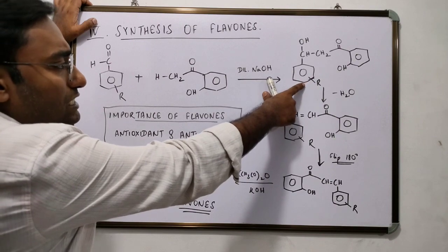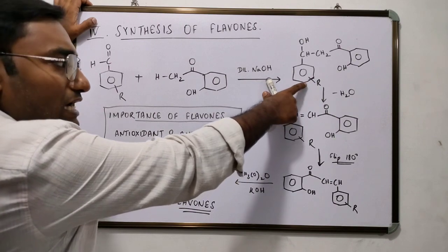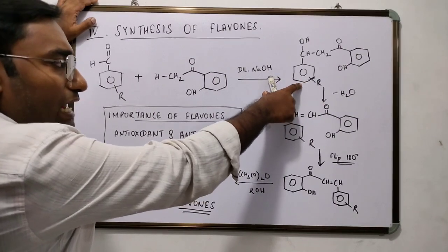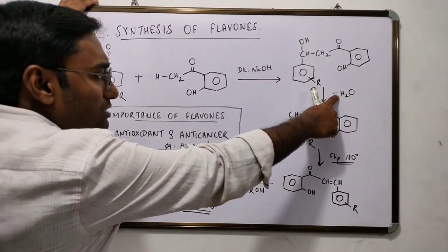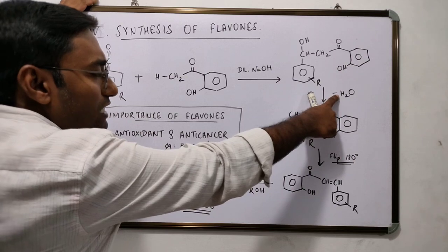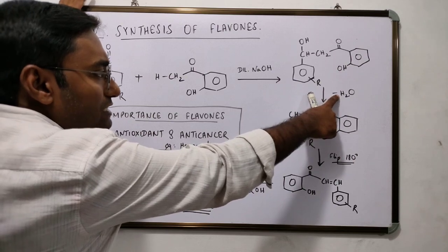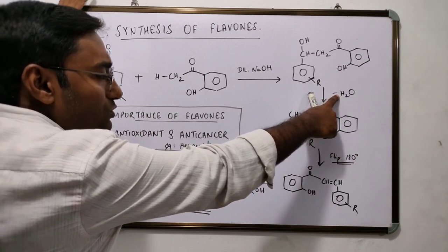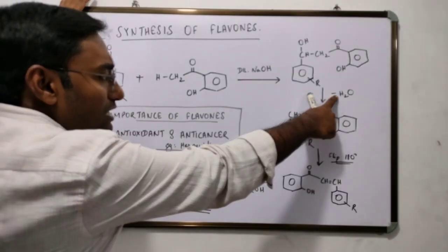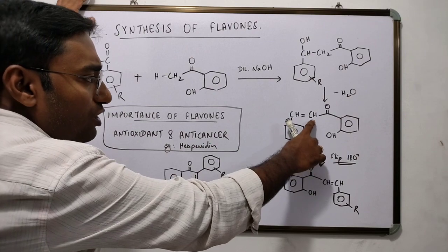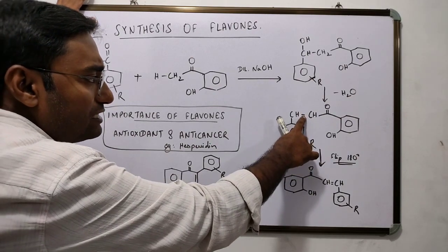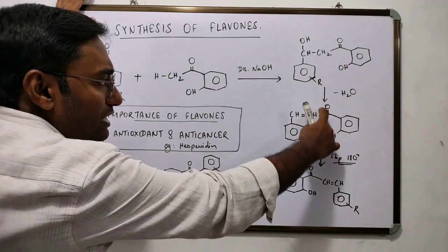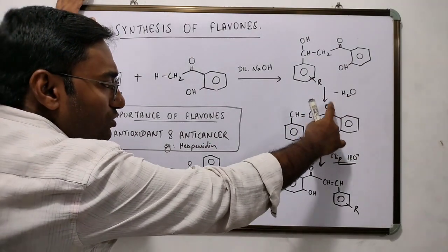The mixed ketone is unstable, and being unstable it loses a molecule of water in the succeeding step, leading to the formation of an alpha-beta unsaturated ketone.